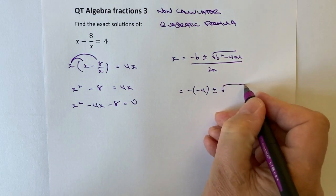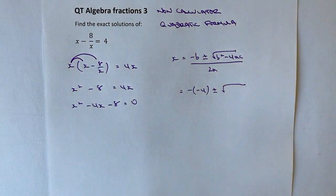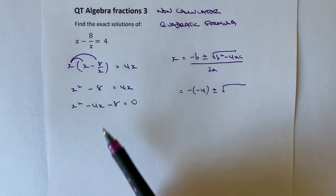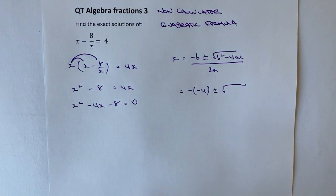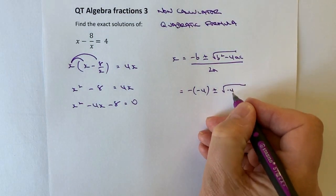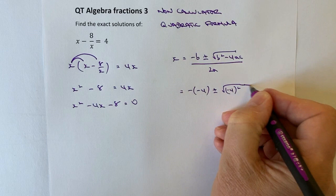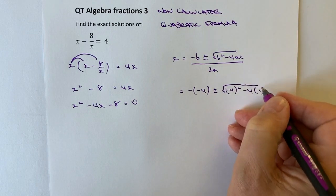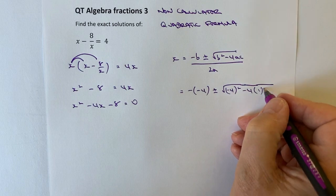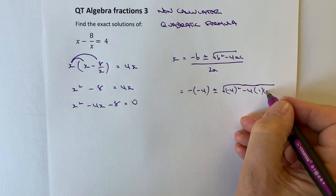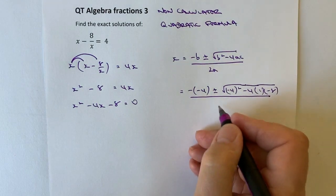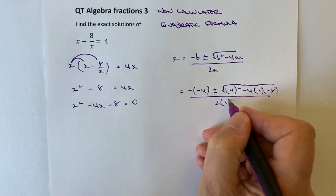Then plus or minus the square root. And I've got b squared. Well, b squared is going to be minus 4 squared. So minus 4 squared minus 4 times a, which is 1, and c, which is going to be minus 8. So I'm going to divide all of that by 2 times 1.